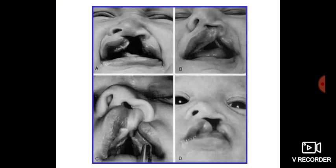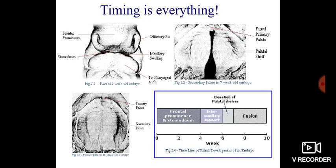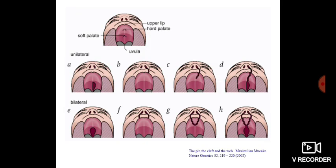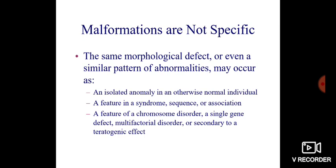Other malformation examples include omphalocele, gastroschisis, and cleft lip and palate. During development, timing is very important — for example, fusion of the palatal shelves occurs between 8 to 10 weeks of gestational age, and any insult during this time can lead to cleft palate and various cleft lip and palate abnormalities.